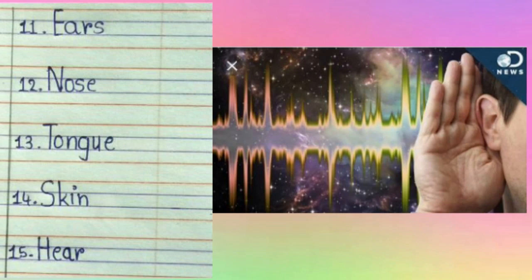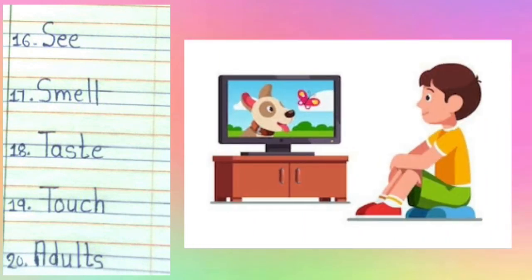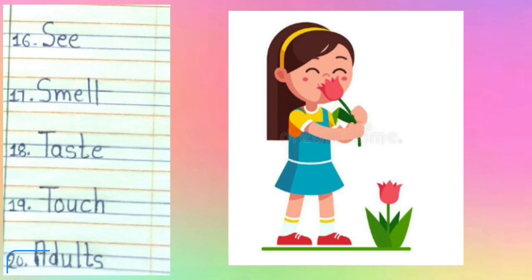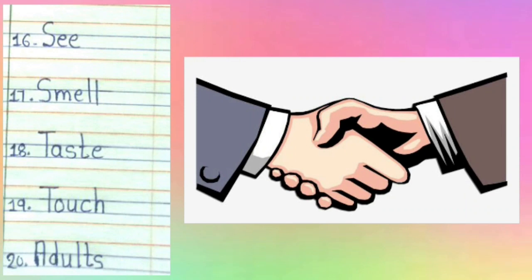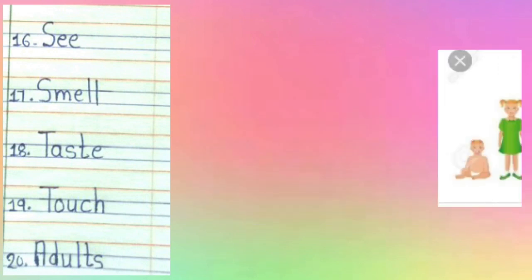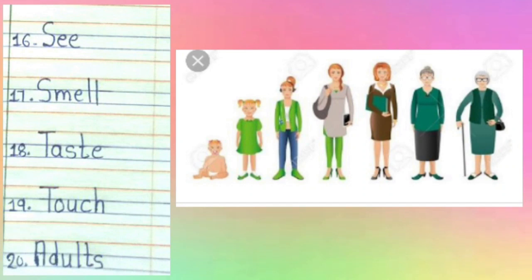Fifteenth number is hear. H-E-A-R. Hear, yaani ki, sunna. Sixteenth number is see. S-E-E. See, yaani ki, dekhna. Seventeenth number is smell. S-M-E-L-L. Smell, yaani ki, sungna. Eighteenth number is taste. T-A-S-T-E. Taste, yaani ki, chakna. Nineteenth number is touch. T-O-U-C-H. Touch, yaani ki, spurs karna, yaato, chuna. Twentieth number is adults. A-D-U-L-T-S. Adults, yaani ki, vayas ka vyaakti — jho log bade ho jate hai, unko adults bolte hai.